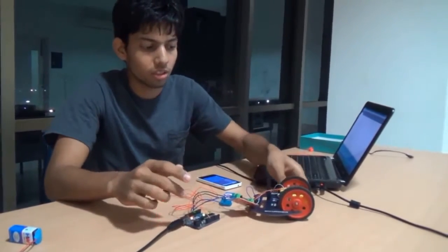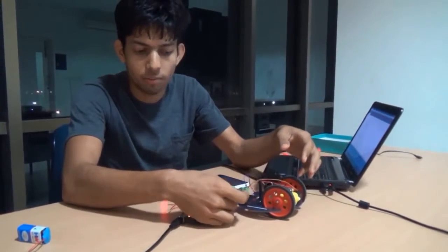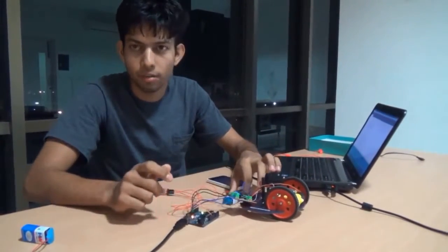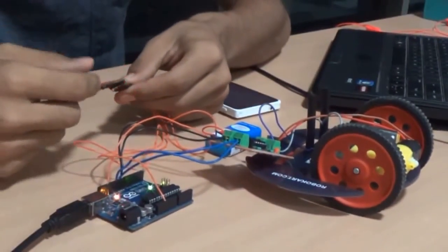So this is consisting of two wheels and two DC motors, simple DC motors and one motor driver and then two batteries and then Arduino and then this is HC05 Bluetooth module.